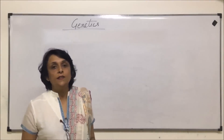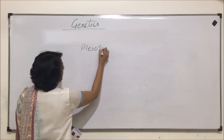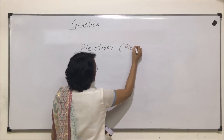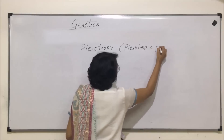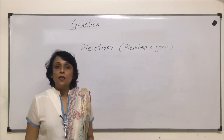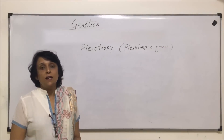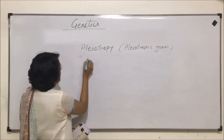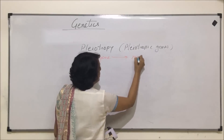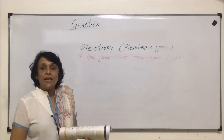In this video, we will talk about another type of inheritance that is pleiotropic, and these genes are known as pleiotropic genes. Up till now, we talked about one gene controlling one phenotype or character. Here, one gene is controlling more than one character. So, one gene is responsible for more than one character — this is pleiotropy.